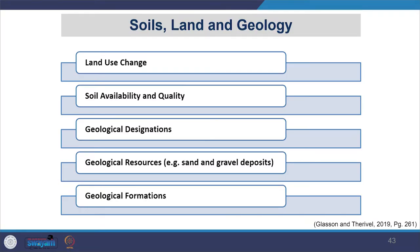Under soil, land and geology, we look at land use change, soil availability and quality of soil, geological designation, geological resources such as sand, gravel, and deposits, and geological formation that would constrain or facilitate the project. The impact on land is usually cumulative — it happens over a longer period of time with all other activities simultaneously going on. For example, how a developed area witnesses gradual urbanization — anything in one place attracts other activities and the place grows gradually.